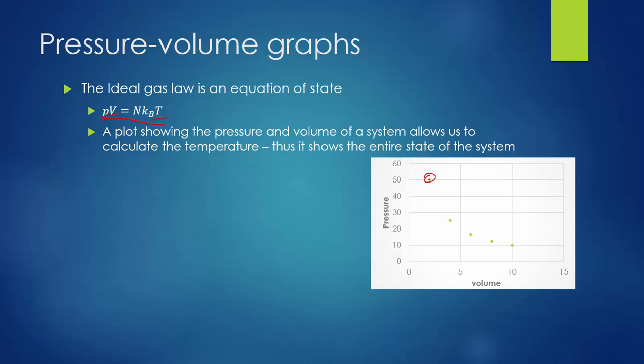A point on this graph represents one state of the system. Different points represent different states. We don't know how the system moved from one state to another, but we know that it did. These points represent different pressure, volume, and temperature states, not different phases.